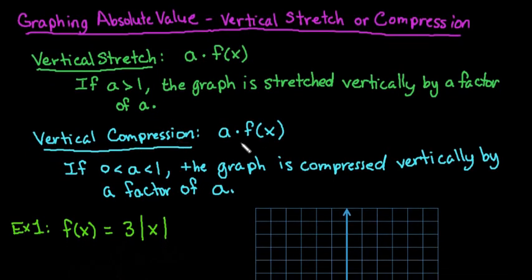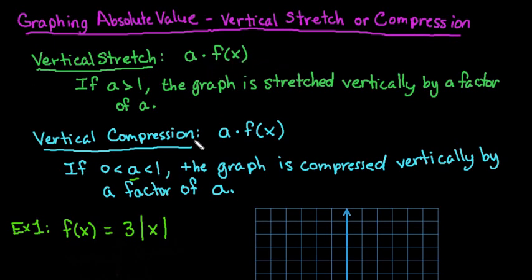A compression occurs if a, the value you're multiplying by, is between 0 and 1 — like 1/2, 2/3, or 3/5. We have to exclude 0 because multiplying by 0 would make it a constant function, and 1 is excluded because multiplying by 1 doesn't change the value at all.